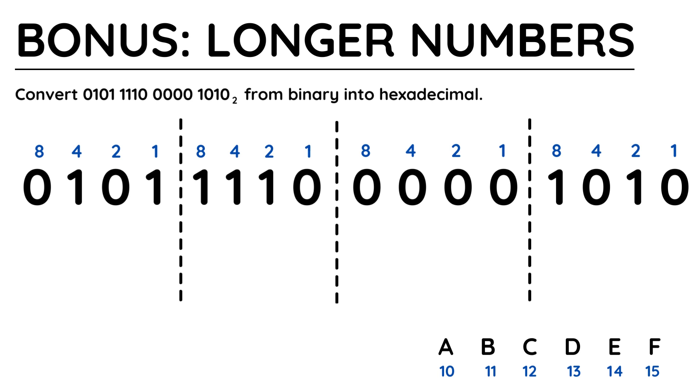Here I've written out the 4 nibbles, and I've put the 1, 2, 4, 8 system above them, now I just need to convert them one at a time.